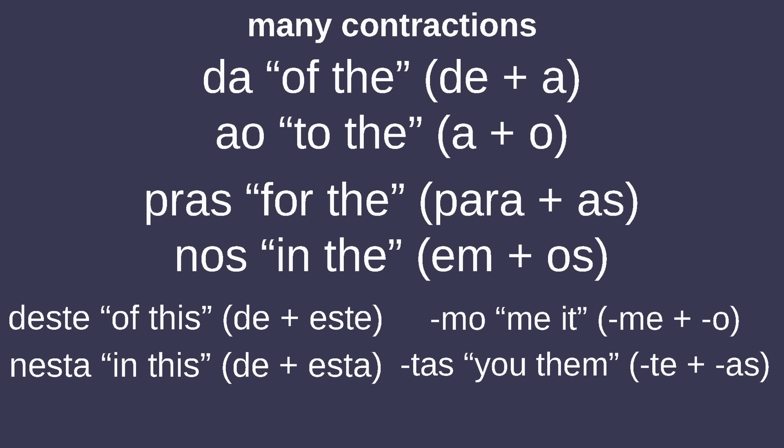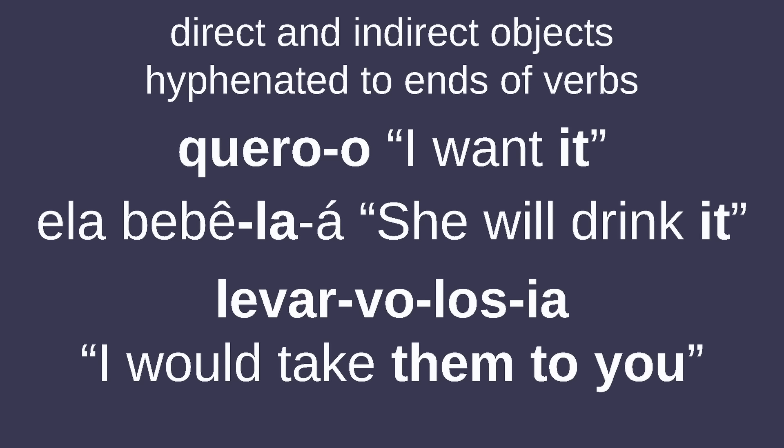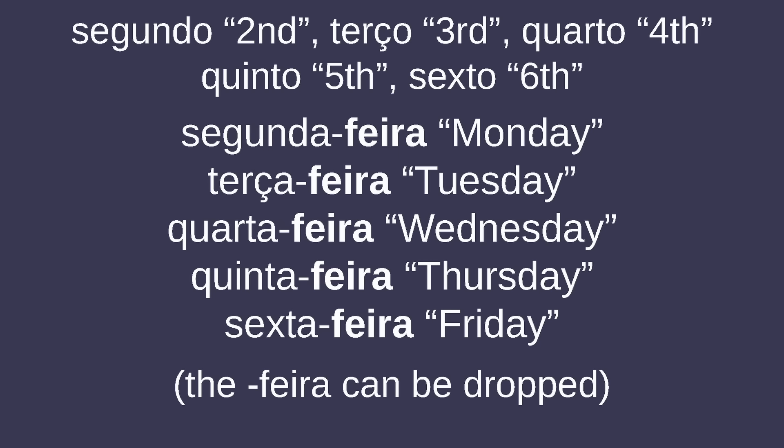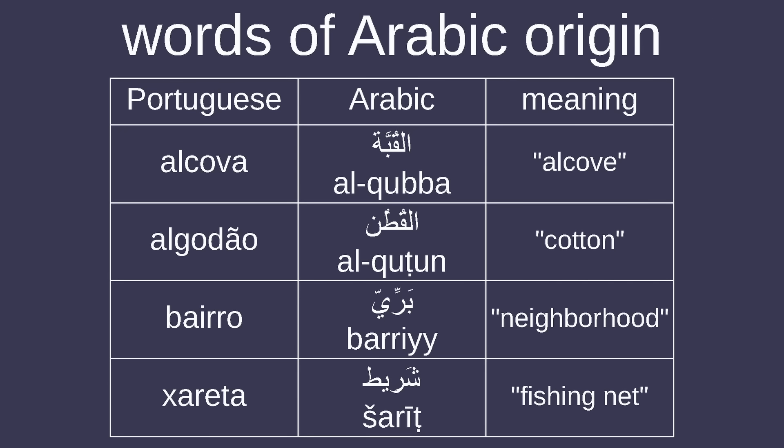Portuguese also has perhaps the highest number of contractions out of any major Romance language. This extends to contractions for pairs of direct and indirect object pronoun clitics, which are sometimes suffixed to verbs with hyphens. There's also the progressive, which in European Portuguese is formed with 'estar' followed by the infinitive, while in Brazilian Portuguese it's formed with 'estar' followed by the gerund, like in Spanish and most other Romance languages. Portuguese also forms most names of its weekdays with ordinal numbers followed by 'feira.' And like in Spanish, there's a significant number of words of Arabic origin.